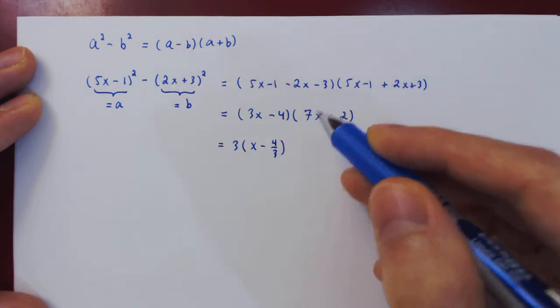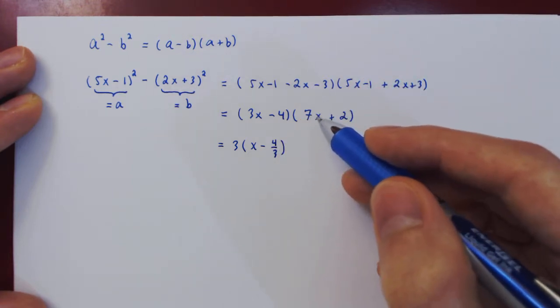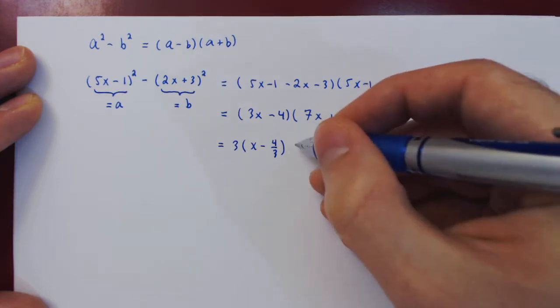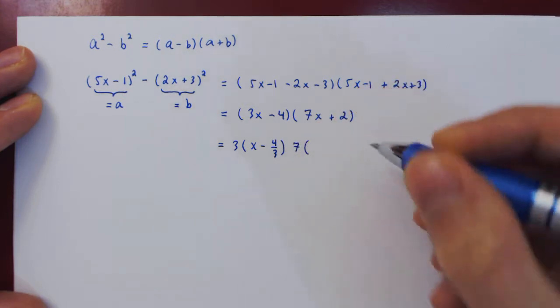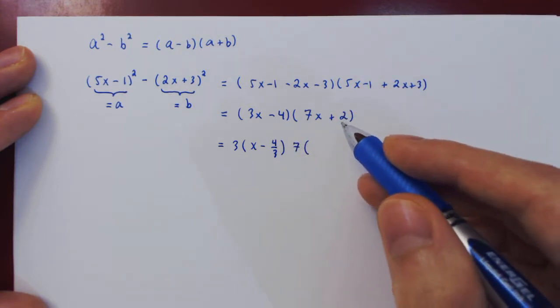3 times, and again, if we want a leading 1 here for x, factor 7. And then you're left with x plus 2 over 7.